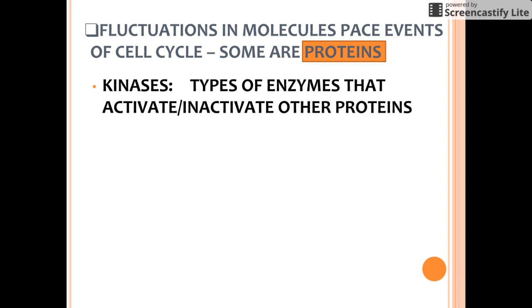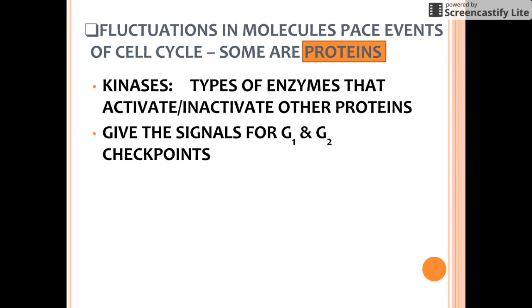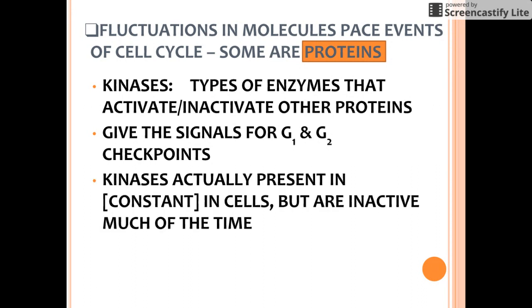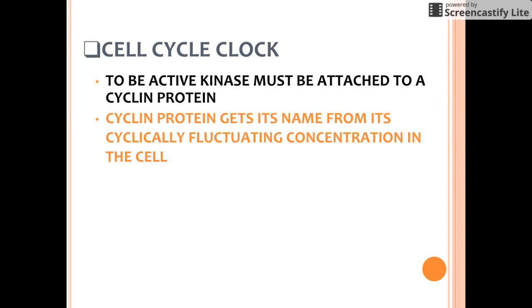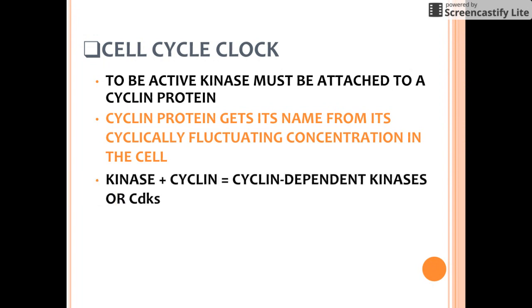Some of these molecules are protein kinases — enzymes that activate or inactivate other proteins. Particular protein kinases give the go-ahead signals at the G1 and G2 checkpoints. The kinases that drive the cell cycle are present at a constant concentration in the growing cell, but much of the time they are in inactive form. To be active, some of these kinases must be attached to a cyclin — another protein that gets its name from its cyclically fluctuating concentrations. Because of this requirement, these kinases are called cyclin-dependent kinases, or CDKs.